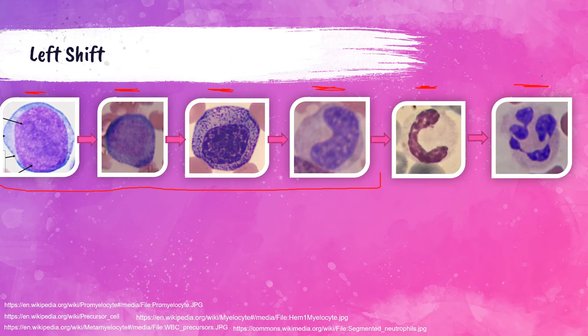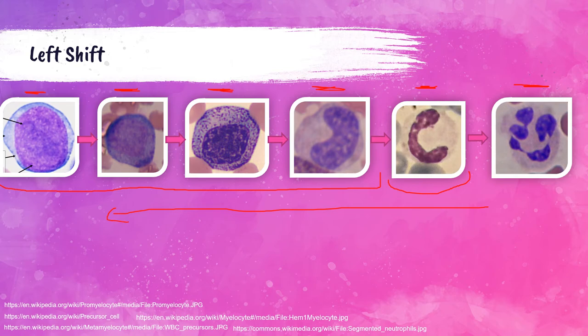The blast, promyelocyte, myelocyte, and metamyelocyte should all be in the bone marrow. A large majority of bands should be in the bone marrow as well, but you can see some in the peripheral blood. Anytime we see any of these cells to the left of the adult segmented neutrophil, that is what we consider a left shift.